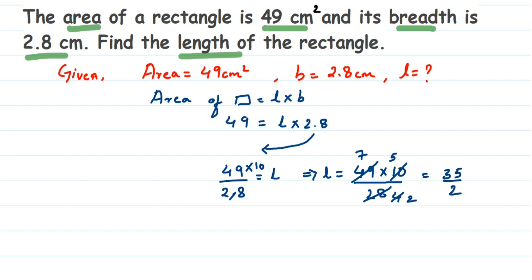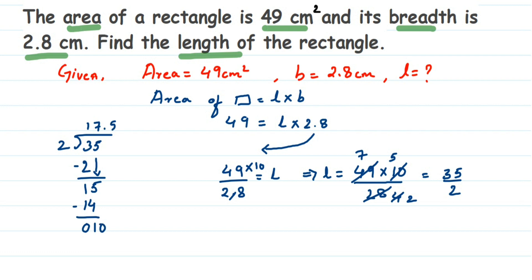Now of course 35 is an odd number, so it will not go evenly in the 2 times table — we are going to get the answer in decimal. You can divide it or you can cancel it; I am going to divide and show you. 2 into 3 — 2 ones are 2, remainder is 1. Drop the 5: 2 sevens are 14, remainder 1. We use a decimal point and take a zero: 2 fives are 10. So we get 17.5. So 17.5 centimeters is the length.